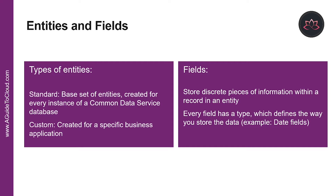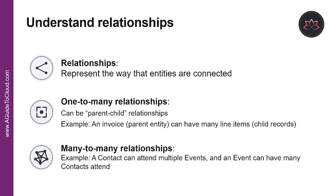Some of the entities used in Dynamics 365 applications are very complex. Fields are a way to store a discrete piece of information within a record in an entity — you might think of them as a column in Excel. Fields have types, meaning you can store data of a certain type in a matching field. For example, if you need to store a date, you use a field with the type Date; if you need a number, you use a field with the type Number.